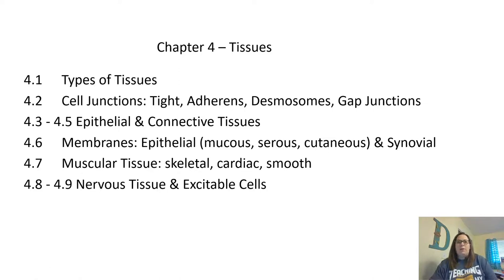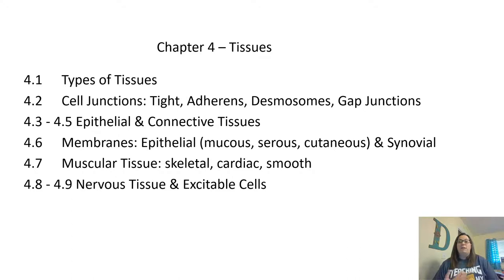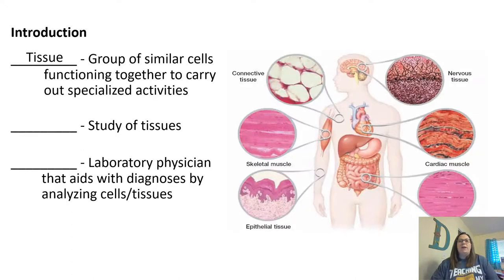Chapter four - we're going to focus on tissues and look at the different types of tissues, as well as cell junctions. The focus of this particular lecture will be really on epithelial and connective tissue. We will hit on muscular and nervous tissue, but we'll talk more about those when we get to the chapters that focus on the nervous system and the muscular system.